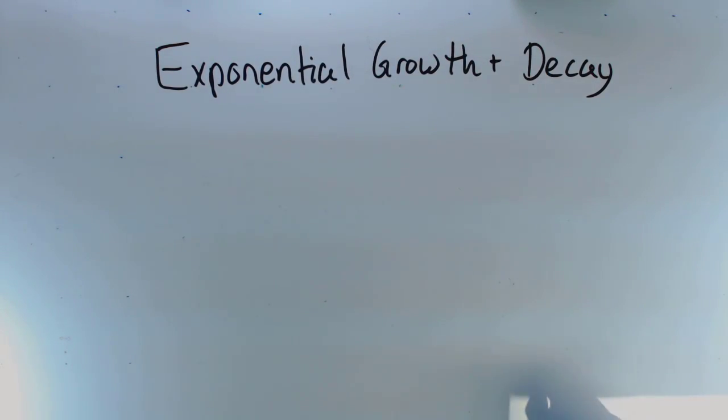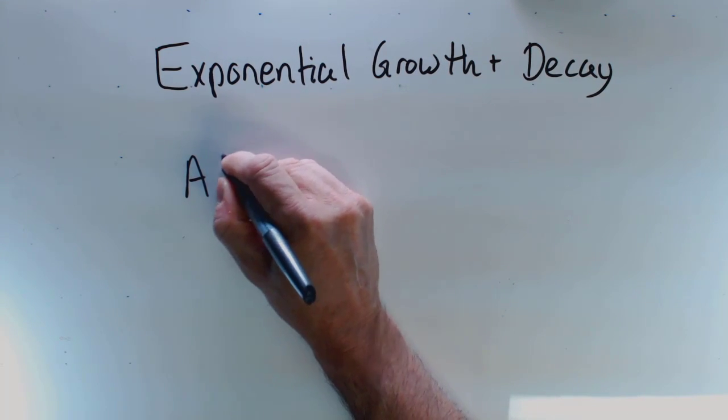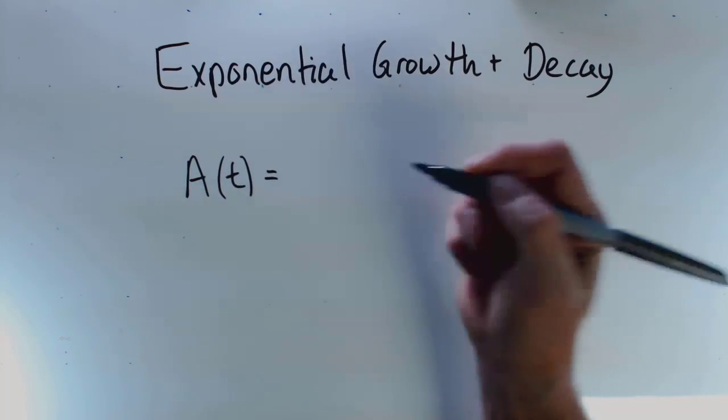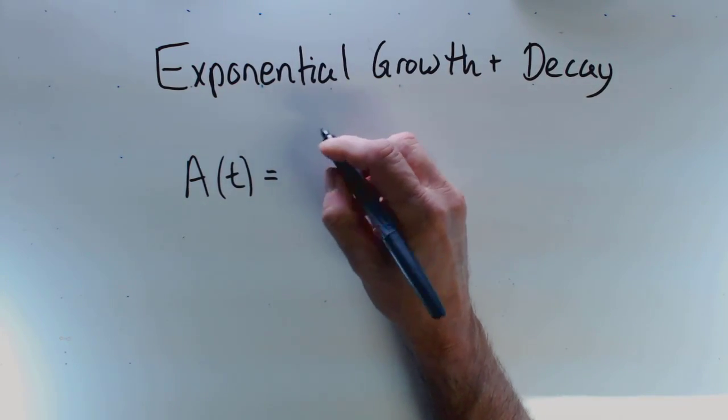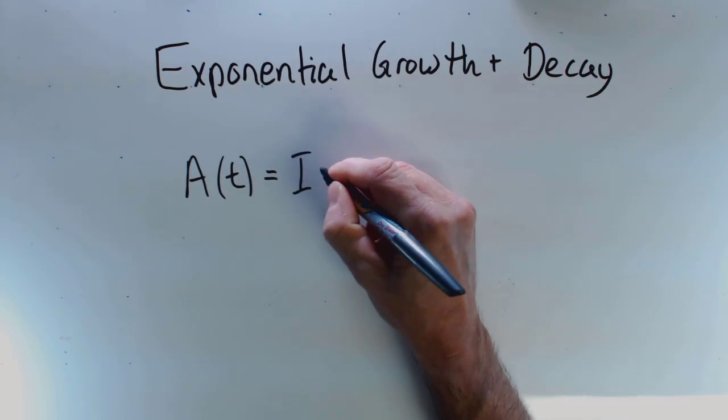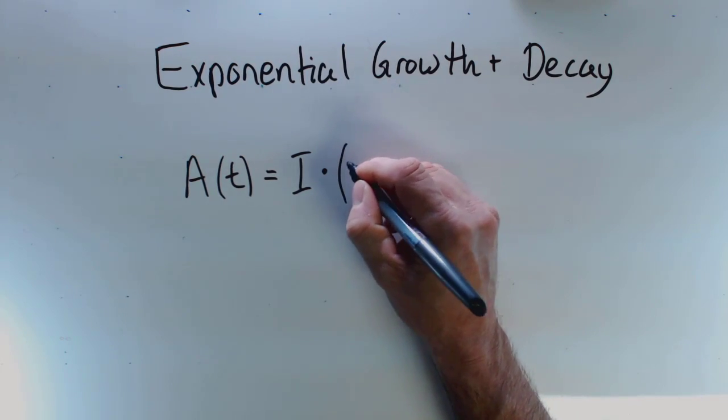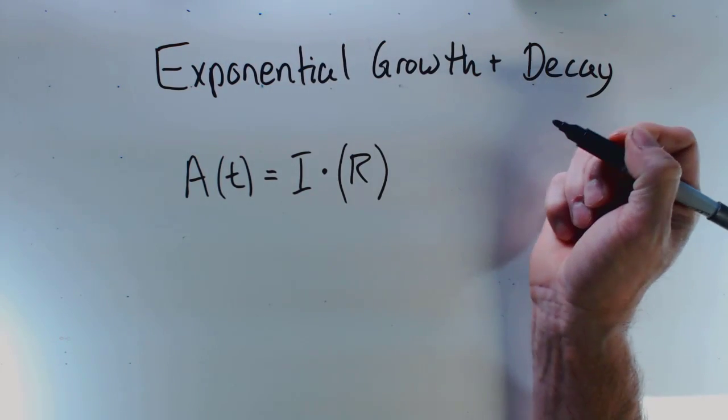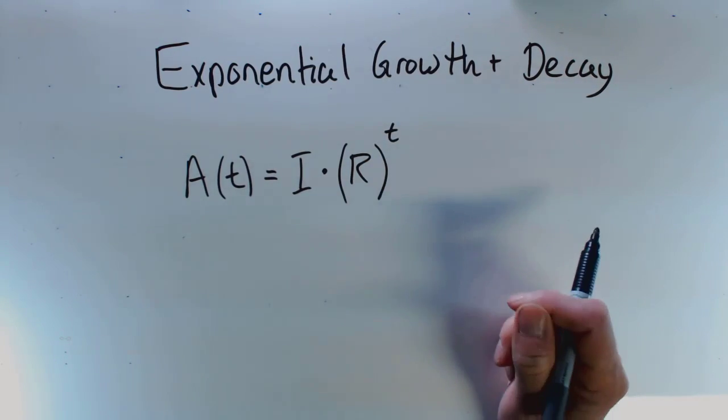A little reminder about exponential growth and decay. Essentially, we're multiplying by a number over and over again. The amount of something at any time t is equal to the initial amount, symbolized as I, which means how much you have to start with, multiplied by the growth rate R to the time t, where t is the number of periods of growth at that rate.